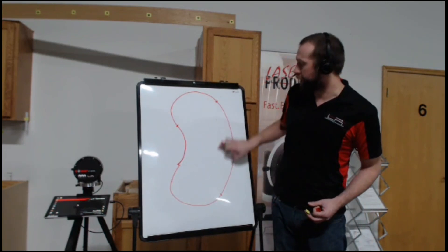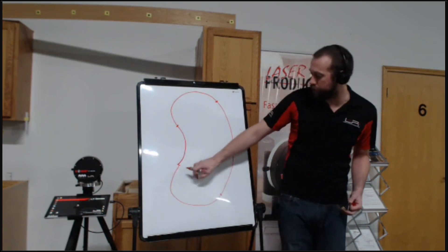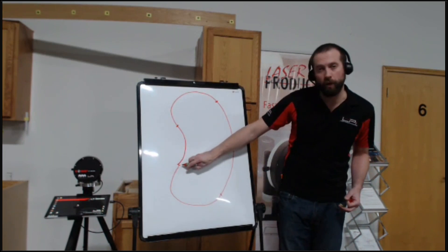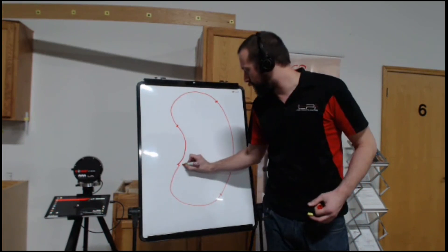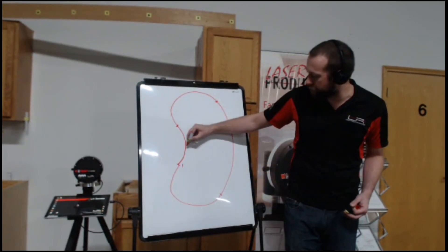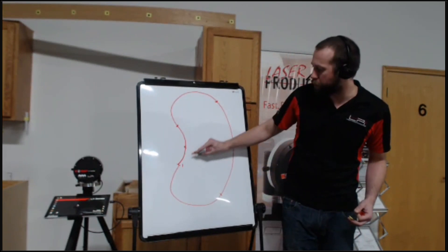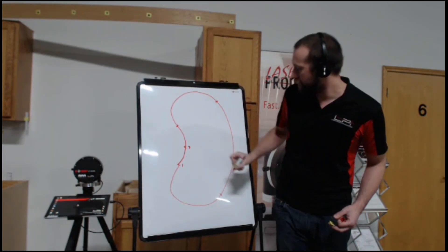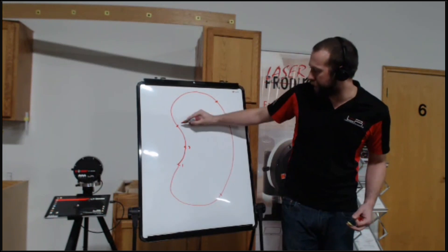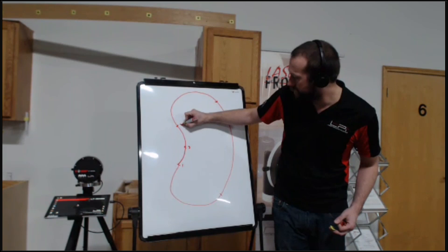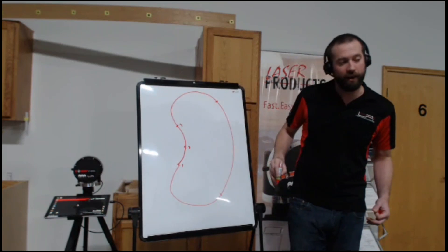The way we want to capture this to make sure we do it as accurately as possible is we're going to start directly on one of these tangent points for point number one. Our second shot is going to be somewhere in the middle of this first radius, and our third shot is going to be right at that tangent point between the first and second arcs.